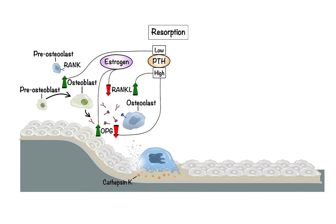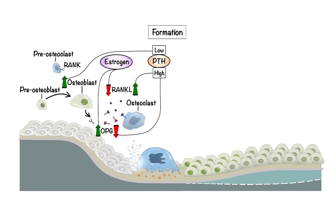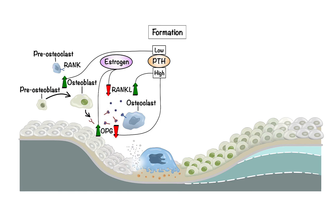After resorption, the reversal phase begins. During this stage, the bone surface undergoes a series of changes to prepare for new bone formation. As osteoclasts retreat and bone lining cells reappear on the bone surface, a conducive environment for osteoblast activity is established. This marks the transition from the reversal phase to the formation phase, where osteoblasts are guided to the bone surface by various signaling molecules and growth factors. They initiate construction of new bone tissue by depositing an osteoid protein matrix, which later mineralizes through the incorporation of calcium and phosphate ions. Sclerostin, a protein originating from osteocytes, plays a key role in managing bone formation by inhibiting the Wnt signaling pathway in osteoblasts, which is essential for their development and function. As a result, sclerostin acts as a brake on bone formation, helping maintain a balance between bone breakdown and growth.